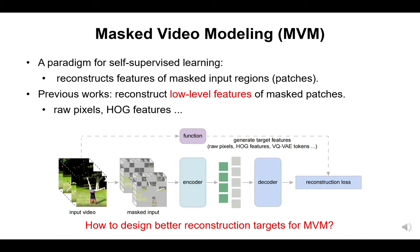Now let's start with the background. Masked Prediction, or Masked Feature Modeling, is a paradigm for self-supervised learning which reconstructs features of masked patches. This paradigm has been adapted to the video domain in recent works like VideoMAE, and boosts video transformers by clear margins compared with supervised pre-training on several video downstream tasks.